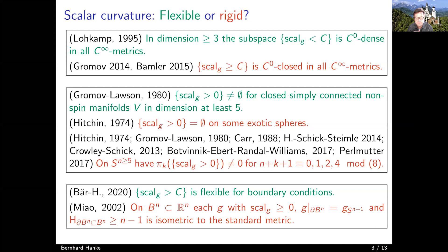We also have a rigidity result, already mentioned in previous talks: if you look at all metrics with a lower scalar curvature bound, then this subspace is C^0 closed in all C^∞ metrics. So if we have a sequence of C^∞ metrics converging C^0 to another C^∞ metric, then lower scalar curvature bounds are preserved.